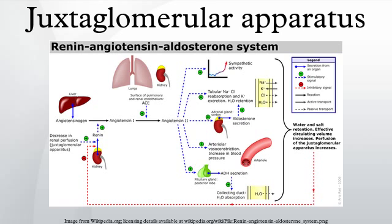Macula densa cells are columnar epithelium thickening of the distal tubule. The macula densa senses any increase in the sodium chloride concentration in the distal tubule of the kidney and secretes a locally active vasopressor, which acts on the adjacent afferent arteriole to decrease glomerular filtration rate, as part of the tubuloglomerular feedback loop.